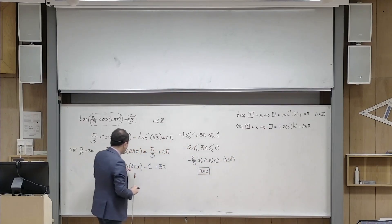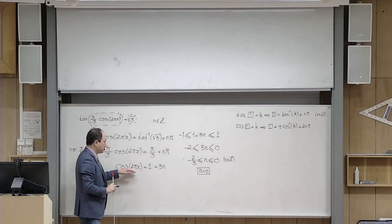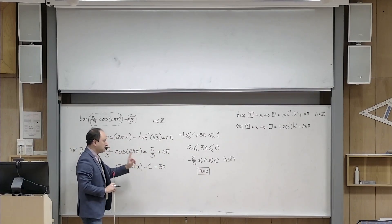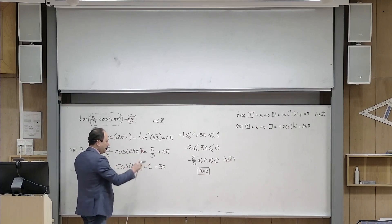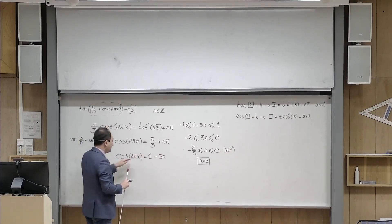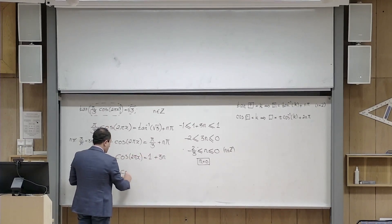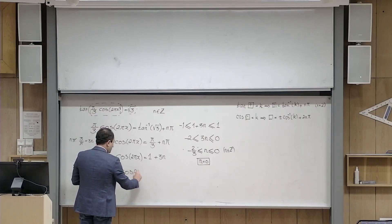This means that I am really not interested in solving an equation except for one value for n, and that is n equal to 0. Now that n is equal to 0, this equation becomes simpler. The equation becomes just simply cosine 2 pi x equals to 1.